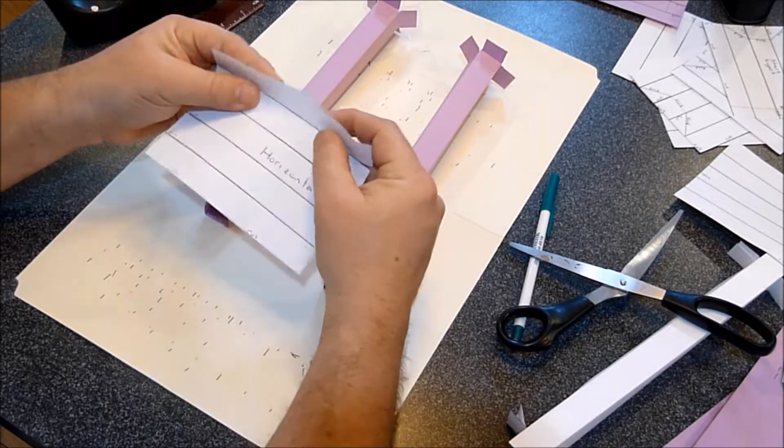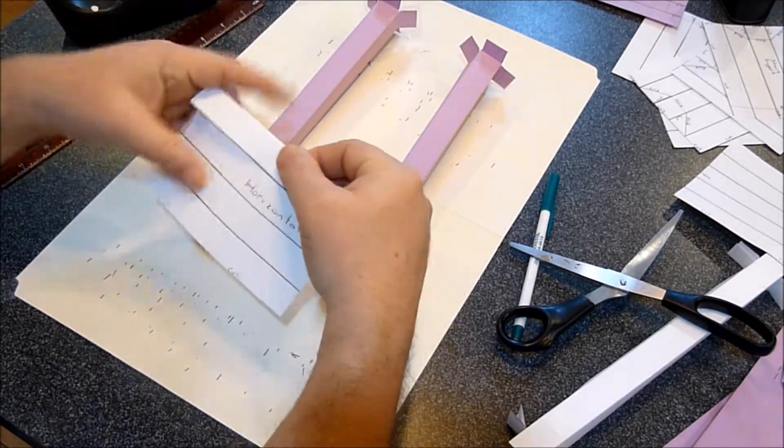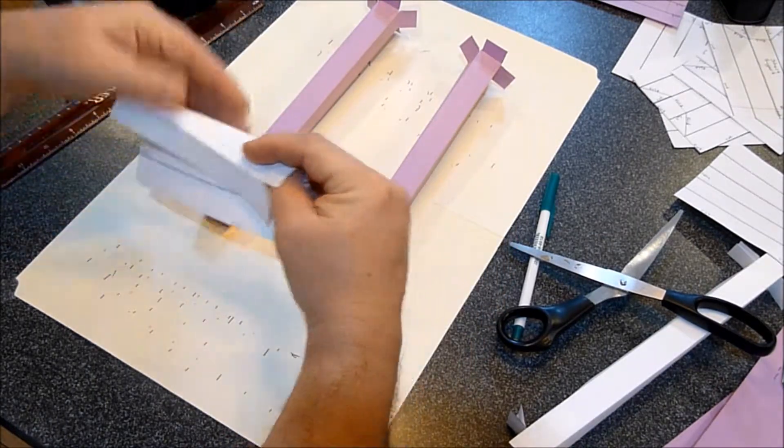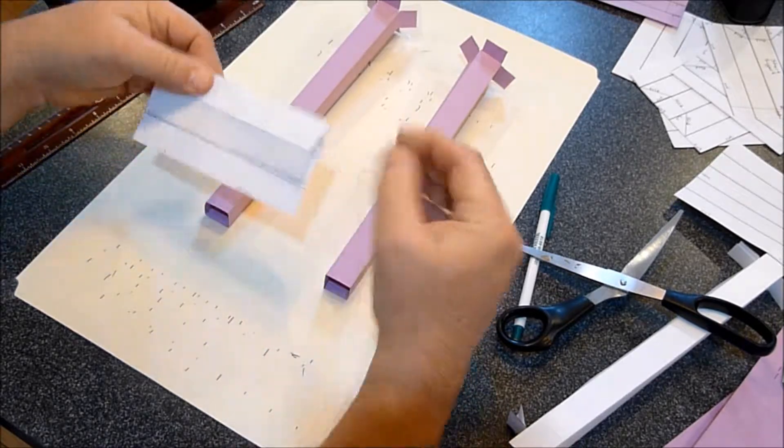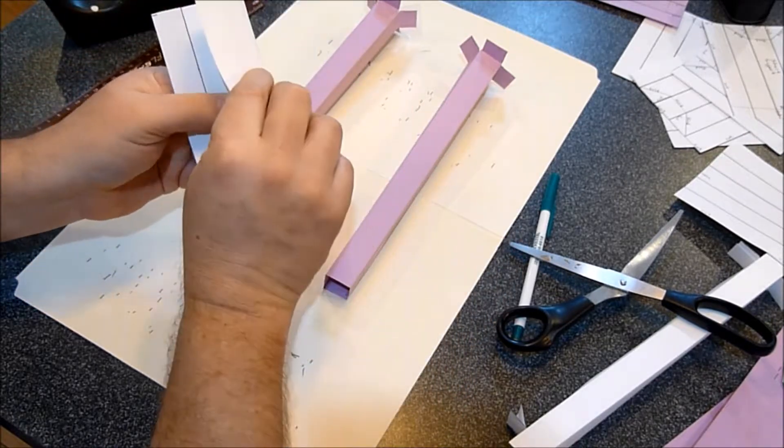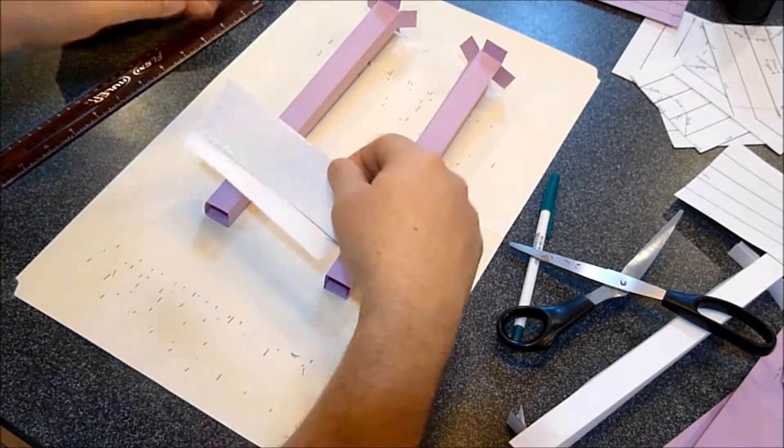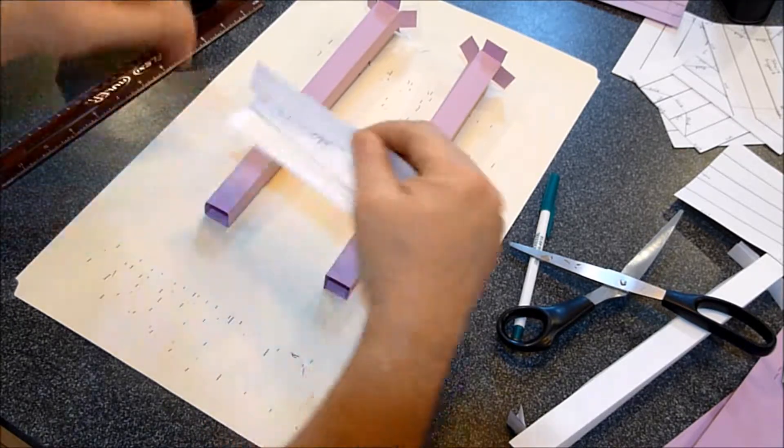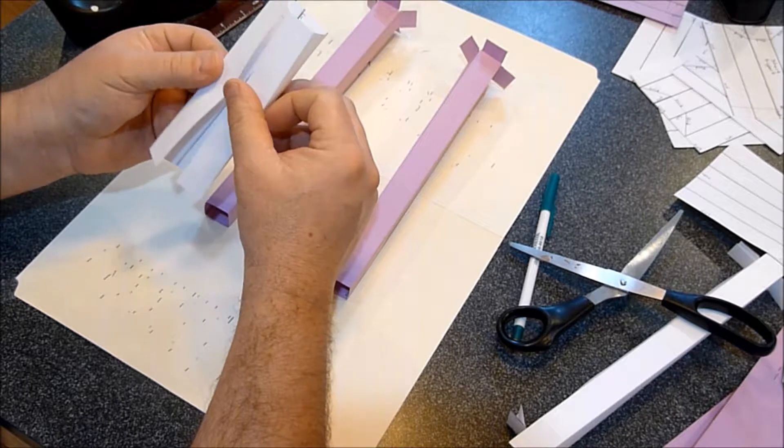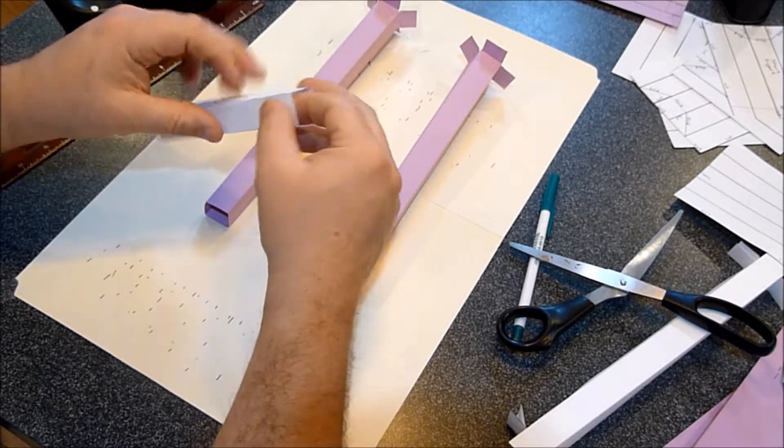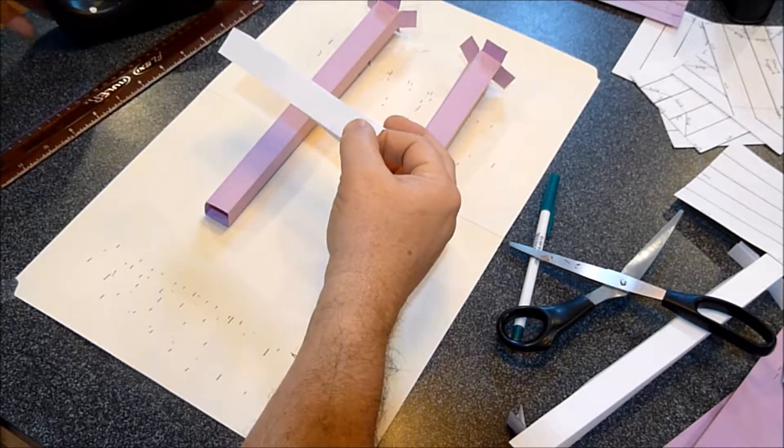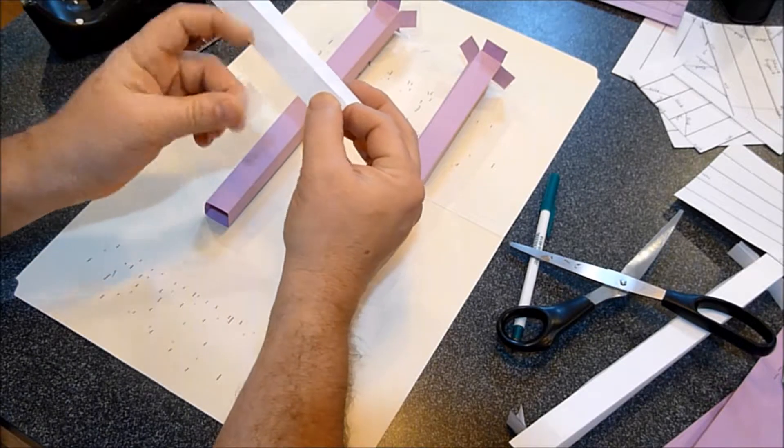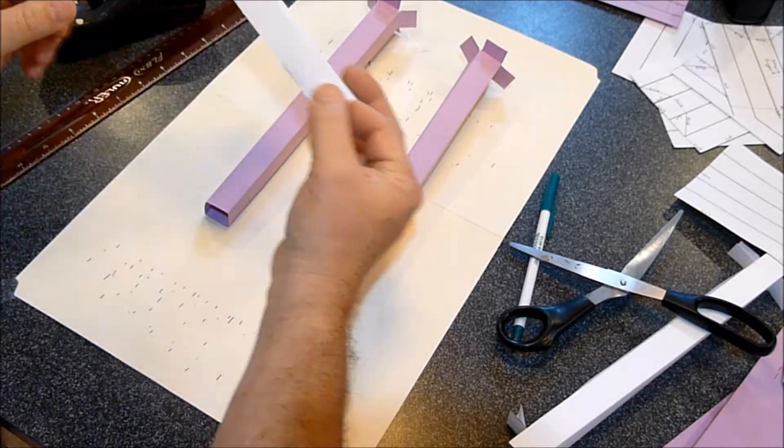Then you just go through the process of folding again. And this is probably the most important one because you're going to have to make a lot of different smaller beams to be able to support your track that you build.